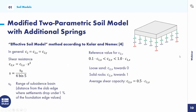The next soil model is the modified two-parametric soil model with additional springs — the effective soil model method according to Kohler and Nemetz. There are line springs and single springs at the edges. It is possible, if not available, to calculate the shear resistance according to the relevant formula. A disadvantage is that you have to estimate the range of the subsidence basin — specifically the distance from the slab edge where settlements drop under 1% of the foundation edge values. That is quite difficult to estimate.